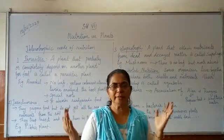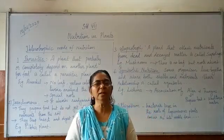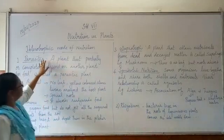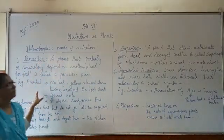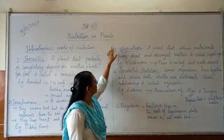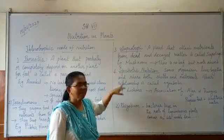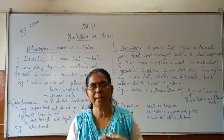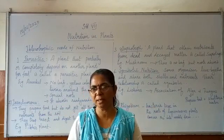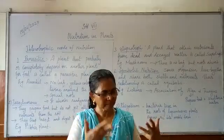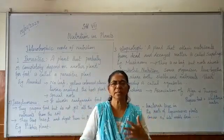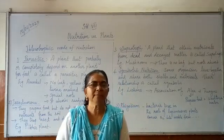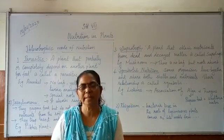These two organisms feed together and help each other with shelter and food. So there are four types of heterotrophic mode of nutrition: parasitic mode of nutrition, insectivorous mode of nutrition, saprotrophic mode of nutrition, and symbiotic nutrition. Symbiotic nutrition is very useful for farmers because it improves the fertility of the soil. Farmers grow fruit plants and leguminous plants alternately in the field so that the soil is fertilized and the yield of the crop is increased.